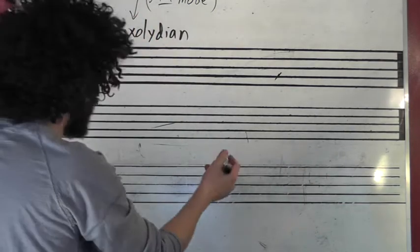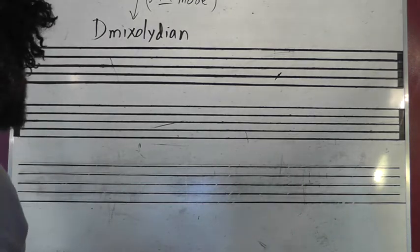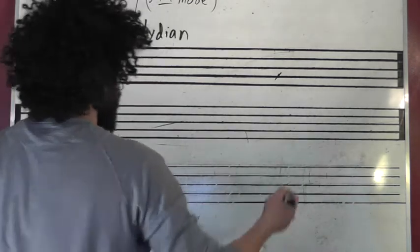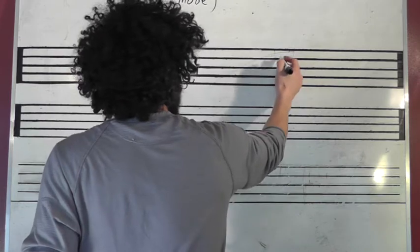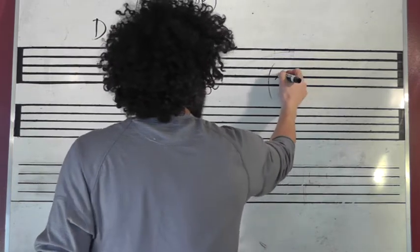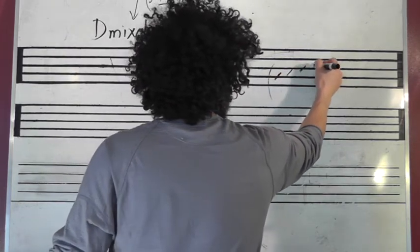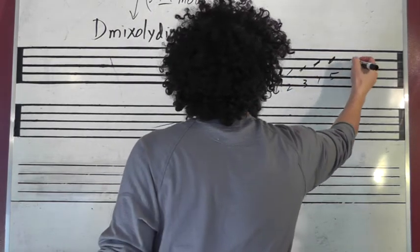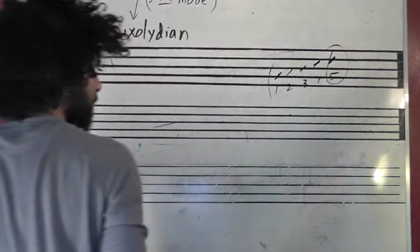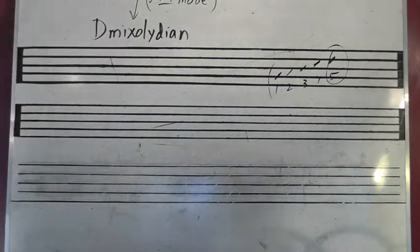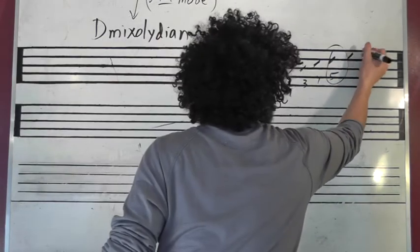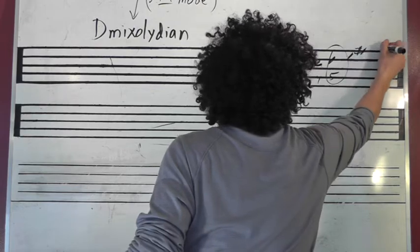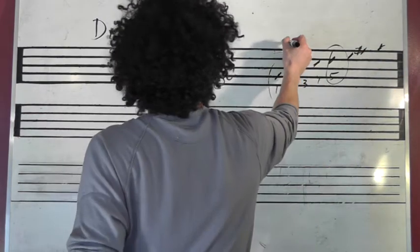So D mixolydian - D is the fifth note of which major scale? That would be, I actually started it already here, it's G major scale. One, two, three, four, five. So let's finish the scale actually - there's F sharp and G. So that's our G major scale.